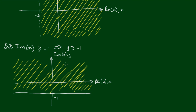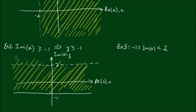Apologies for the untidy writing. Now Example 3: the number 1 is less than or equal to the imaginary part of z, but the imaginary part is also less than 2. With 2 placed higher on the vertical axis, the upper bound is a dotted line at y equals 2. All valid points must fall between the solid line at y equals negative 1 and the dotted line at y equals positive 2, and y can take on the value of negative 1 in this case.